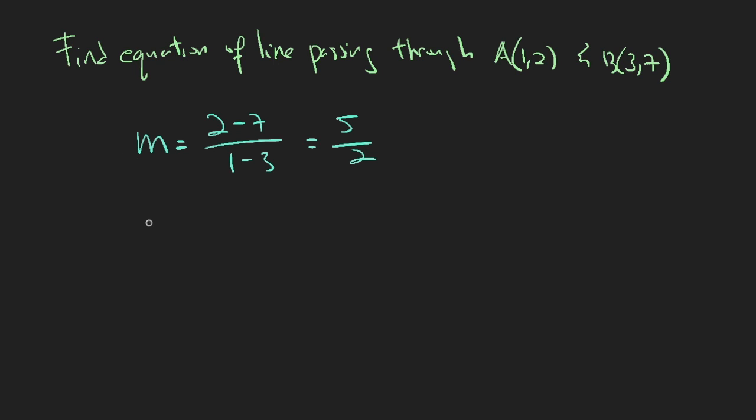So all straight lines take on this form, y equals to mx plus c. And for this question, m is 5 over 2, so we can put it inside, 5 over 2x plus c. So now we want to find out what is c.